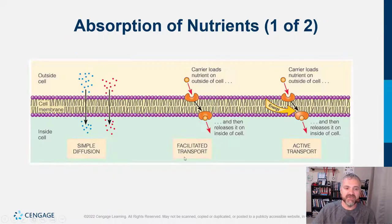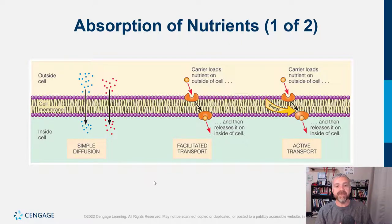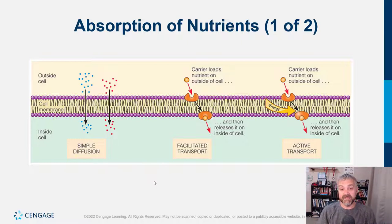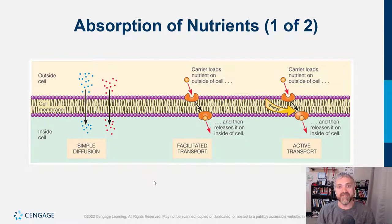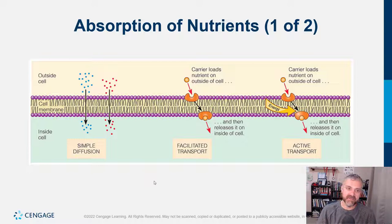There are different types of absorption: simple diffusion, where things move from an area of high to low concentration; facilitated diffusion, where carriers transport things through your intestinal lining; and active transport, which requires energy. Diffusion is a passive process and doesn't require energy; active transport physically carries things in at an energy cost. Between ten and twenty-five to thirty percent of the calories in any meal is needed to digest, absorb, and transport those nutrients — that's called the thermic effect of food, around ten percent of your daily energy expenditure.